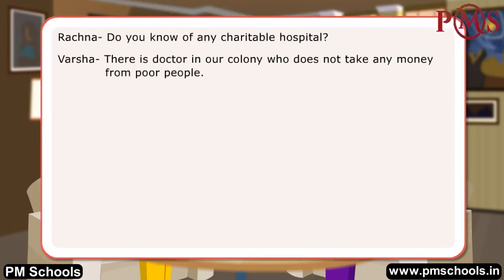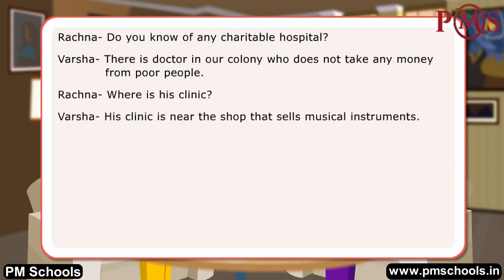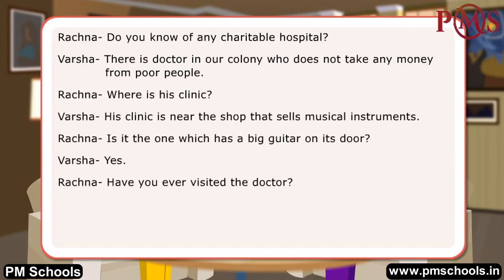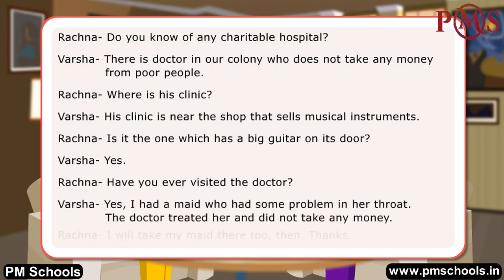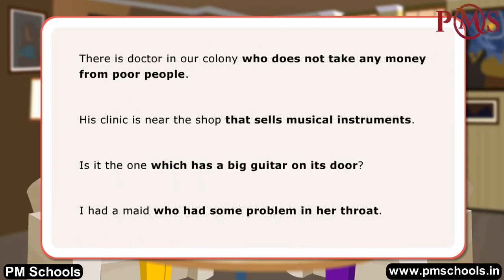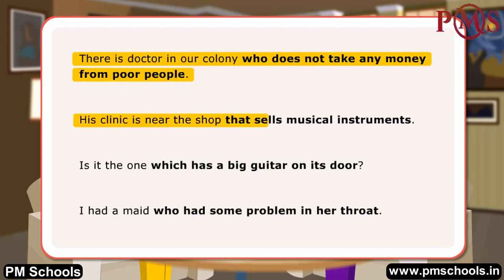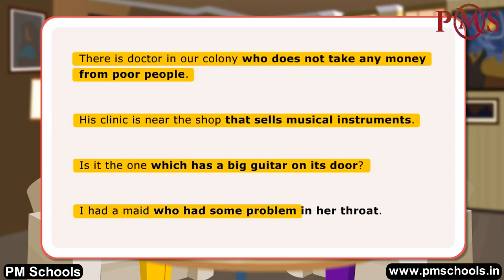In the dialogues, Rachna and Varsha have used relative clauses with who, that, and which to express themselves. Here are examples: 'There is a doctor in our colony who does not take any money from poor people.' 'His clinic is near the shop that sells musical instruments.' 'Is it the one which has a big guitar on its door?' 'I had a maid who had some problem in her throat.'